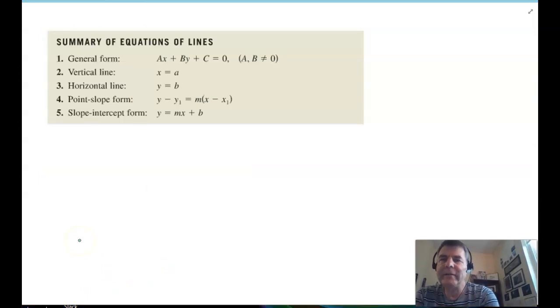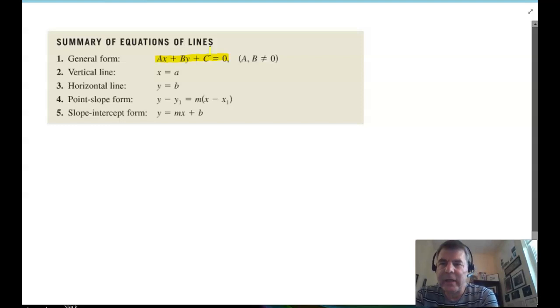So, to summarize different equations of lines, you have what's called a general form. And this is in the form of something times x plus something times y plus c equals 0. And a, b, and c are integers. No fractions. You have a vertical line. It's always x equals a number. Horizontal line. Y equals a number. Point slope. Y minus the y-coordinate of the point equals the slope times x minus the x-coordinate. And finally, the slope-intercept form, y equals mx plus b.